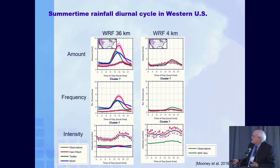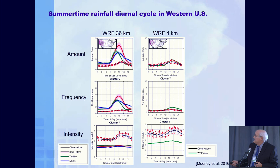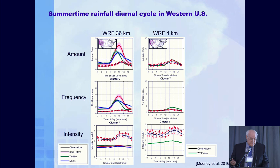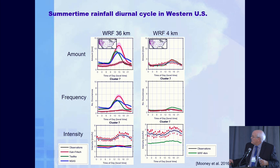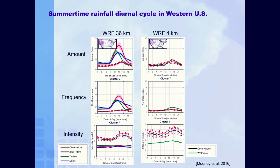Looking at output, I compare WRF at 36 kilometers with various convective parameterizations — Kain, Fritsch, Tiedtke, NSAS — and WRF at 4 kilometers over the same region. Looking at precipitation amount, frequency, and intensity, you can see that all the convective parameterizations are getting it wrong; the observations are the solid red line with dots. But as soon as we get to WRF 4 kilometers, we're getting amount, frequency, and intensity much better — not quite right yet, but a tremendous improvement.